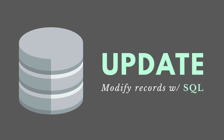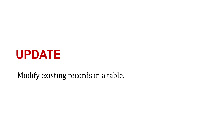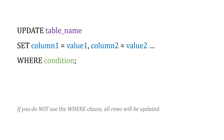We can use the UPDATE statement in SQL to modify existing records, ones that are already there. Here's what the syntax looks like: UPDATE, the table name we want to change, SET a column in that table equal to a new value, WHERE and only where a condition is met.